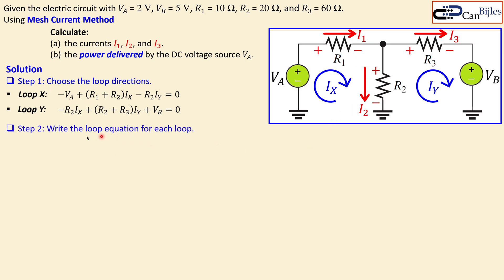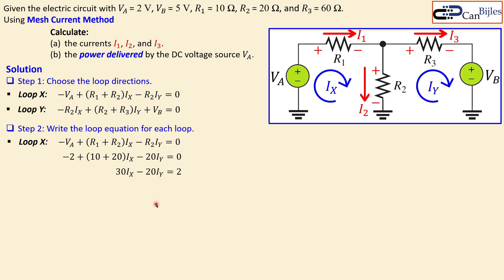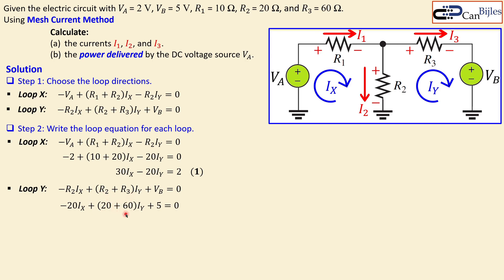Now we write the loop equations and substitute the component values. For loop X: substituting VA = 2V, R1 = 10Ω, R2 = 20Ω gives us 30·IX minus 20·IY = 2 — call this equation one. For loop Y: substituting R2 = 20Ω, R3 = 60Ω, VB = 5V gives us minus 20·IX plus 80·IY = negative 5 — call this equation two.